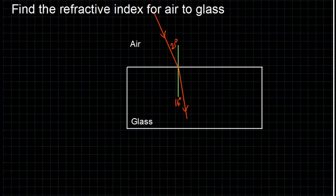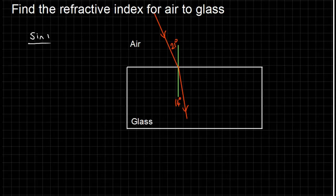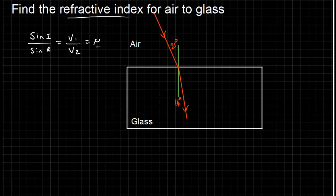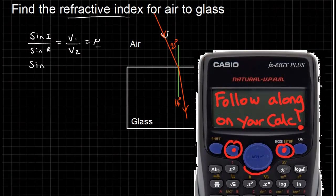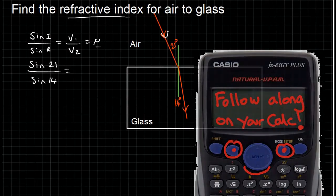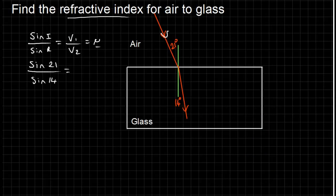Next example: find the refractive index again. Again, every single time you do the questions, write the entire formula out. The ray is coming from air to glass, so the angle of incidence is 21 and the angle of refraction is 14. Taking the sine of 21 and dividing it by the sine of 14 gives 1.48. It doesn't matter what the angles are — if it's the same mediums, like air to glass, you'll always get the same refractive index.